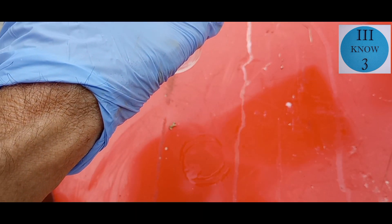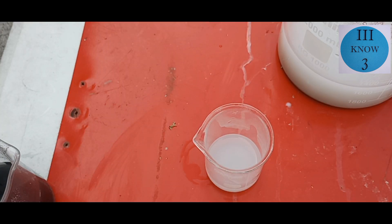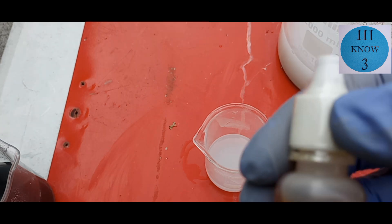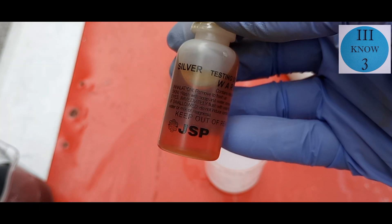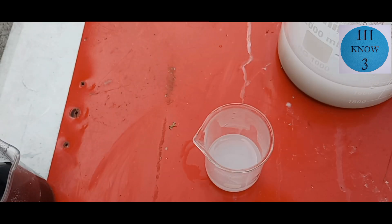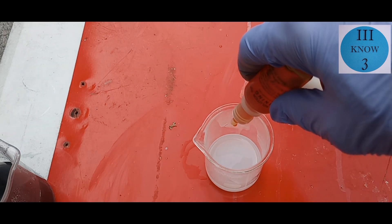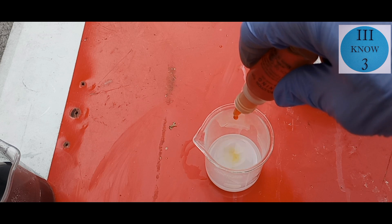So I'm going to get a little bit of this solution, and then I will add some of this silver test. Potassium dichromate should make the solution turn yellow if there are lead salts or lead dissolved in the liquid. Four or five drops should really be plenty.